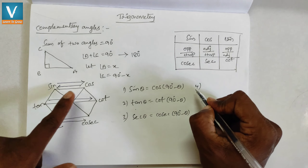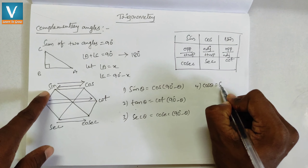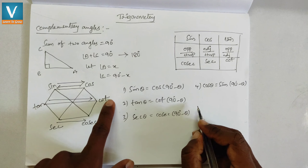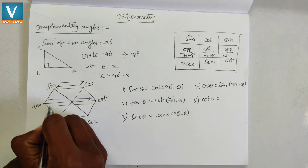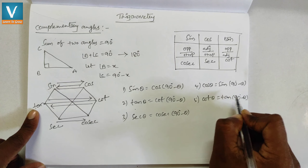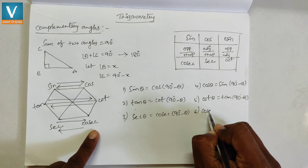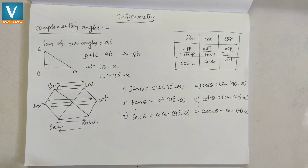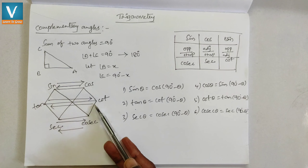Now doing the reverse: cos θ = sin(90° − θ), cot θ = tan(90° − θ), and cosec θ = sec(90° − θ). So these are the six complementary angle formulas — sine to cos, cos to sine, tan to cot, cot to tan, sec to cosec, and cosec to sec — easily remembered using the hexagon.